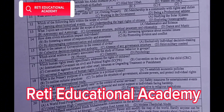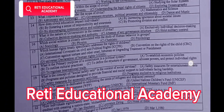Question number 14: How does civics education impact individuals? A. By increasing ignorance about societal issues. B. By fostering a sense of responsibility and awareness. C. By promoting division and conflict. D. By discouraging community collaboration. The correct answer is B: By fostering a sense of responsibility and awareness.